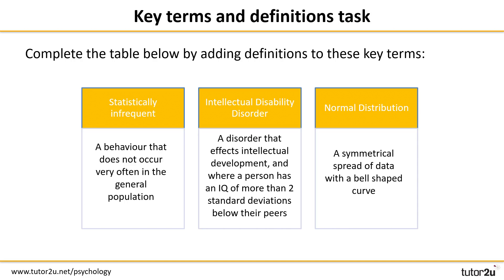Let's see how you got on. The three definitions are on the screen now. We've got 'statistically infrequent', which is a behaviour that does not occur very often in the general population. You have the two other definitions and you can compare your answers to the ones on the screen — hopefully you wrote something similar yourself.